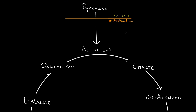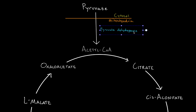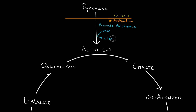To convert pyruvate into acetyl-CoA, we need an enzyme known as pyruvate dehydrogenase, or the pyruvate dehydrogenase complex. When you have a dehydrogenase, you're basically taking an NAD+ and turning that into NADH and a proton, or H+.